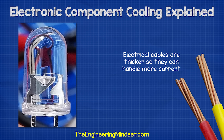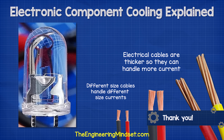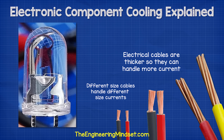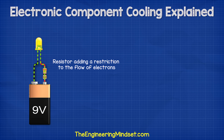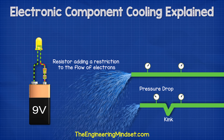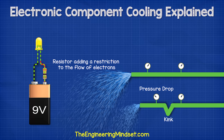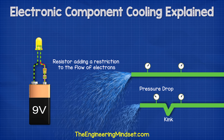On the other hand, an electrical cable is much thicker so it can handle far more current flowing through it. That's why we have different sized cables to handle different amounts of current. Coming back to the resistor, this is essentially just adding a restriction to the flow of electrons. It's like having a kink in a water pipe. The kink restricts how much water can flow through the pipe, so it wastes energy.